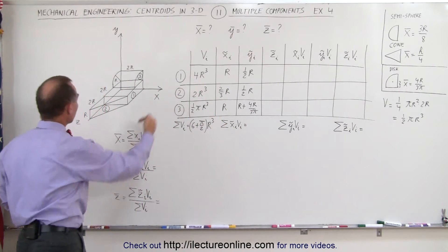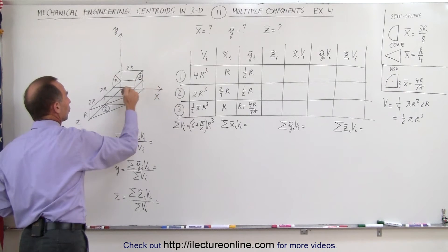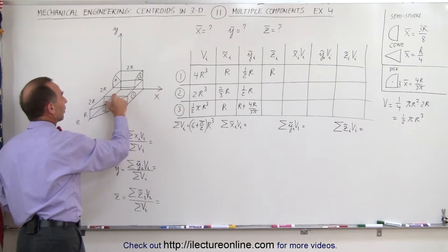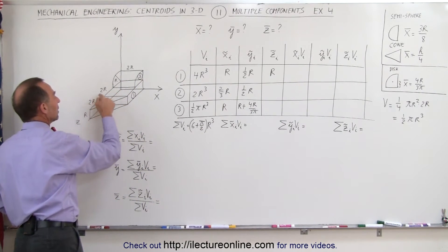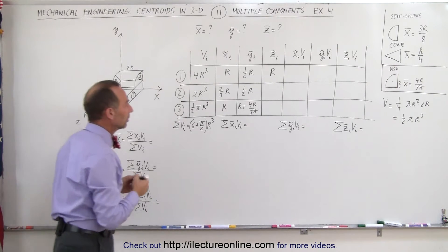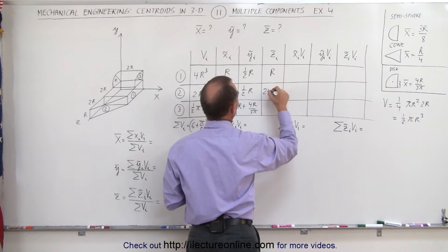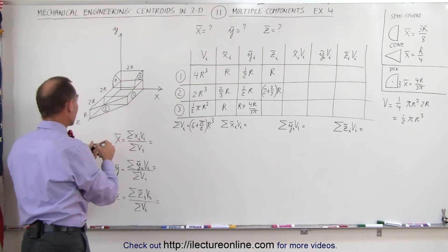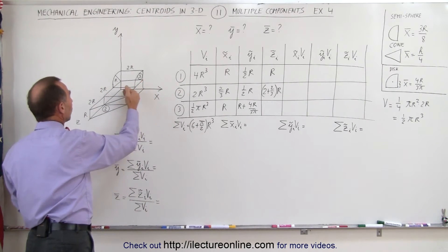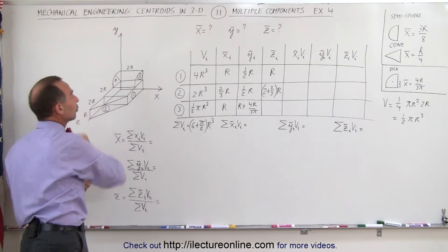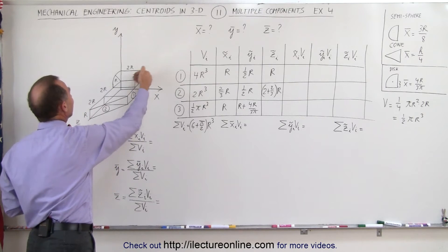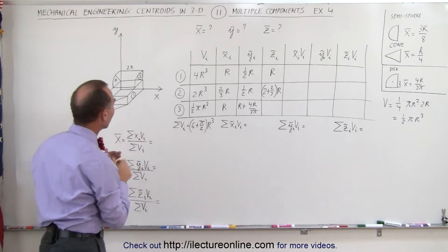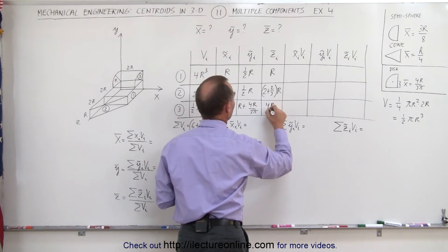In the z-direction, for the rectangular slab it's halfway from the origin to 2r, so z̄₁ = r. For the triangular piece, it's 2r plus one-third of the distance from there to there, which is (2/3)r + 2r = (2 + 2/3)r, so z̄₂ = (8/3)r. Finally, the centroid in the z-direction for the quarter cylinder is z̄₃ = 4r/(3π).